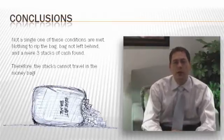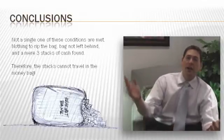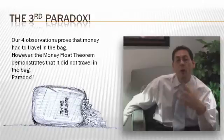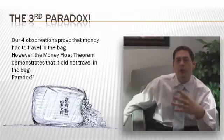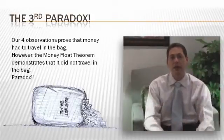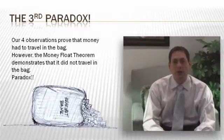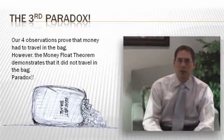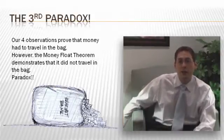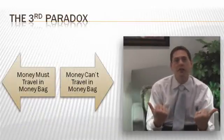So what's all this tell us? It tells us that the stacks cannot travel in the money bag. Here we go. That's right, a third paradox. Our four observations prove that the money had to travel in the bag. It had to. Independent stack travel is impossible. However, our money float theorem demonstrates that it did not travel in the money bag. And yes, when you have contradictions like that, that is known as a paradox. We've talked about this before. Money must travel in the bag. Money cannot travel in the bag.